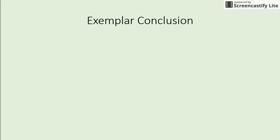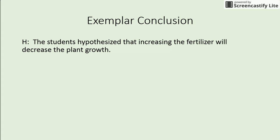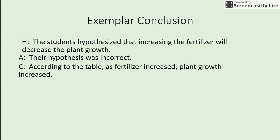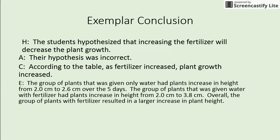For our example conclusion: H — students hypothesized that increasing fertilizer will decrease plant growth. A — their hypothesis was incorrect. C — according to the table, as fertilizer increased, plant growth increased. E — we take our two data sentences and include them in the evidence section. The plants given water only increased from 2.0 to 2.6 centimeters, while plants given fertilizer increased from 2.0 to 3.8 centimeters. Overall, the group with fertilizer resulted in a larger increase in plant height. Go ahead and copy that down in the evidence section.